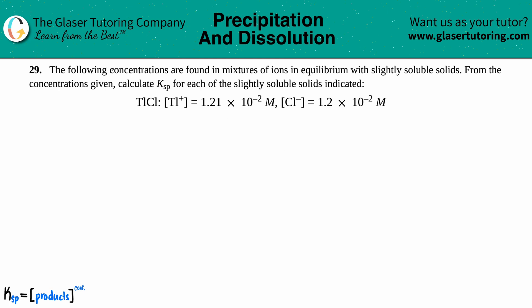Number 29: The following concentrations are found in mixtures of ions in equilibrium with slightly soluble solids. From the concentrations given, calculate the Ksp for each of the slightly soluble solids indicated. Okay, we have TlCl. I feel like we've done this compound already somewhere in this chapter. So we have to find the Ksp for TlCl.